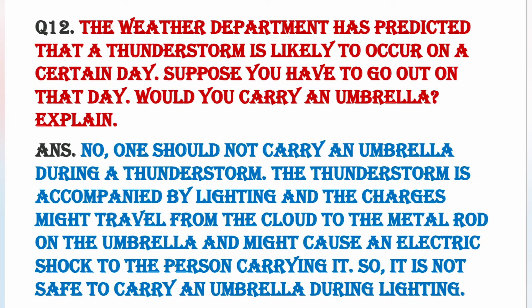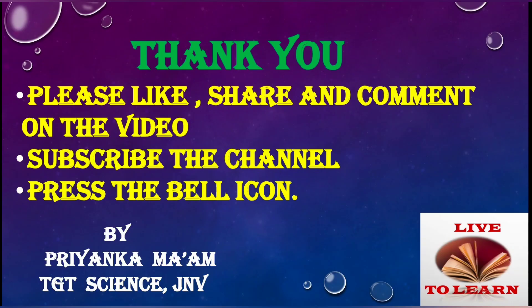Next question: The weather department has predicted that a thunderstorm is likely to occur on a certain day. Suppose you have to go out — would you carry an umbrella? Explain. Answer is no, क्योंकि thunderstorm के साथ lightning भी होती है। जो metal rod umbrella के ऊपर लगी होती है, उसके through lightning cloud से उस rod में travel कर सकती है, जिससे umbrella carry करने वाले person को electric shock लग सकता है। So ऐसे मौसम में umbrella carry करना dangerous साबित हो सकता है।